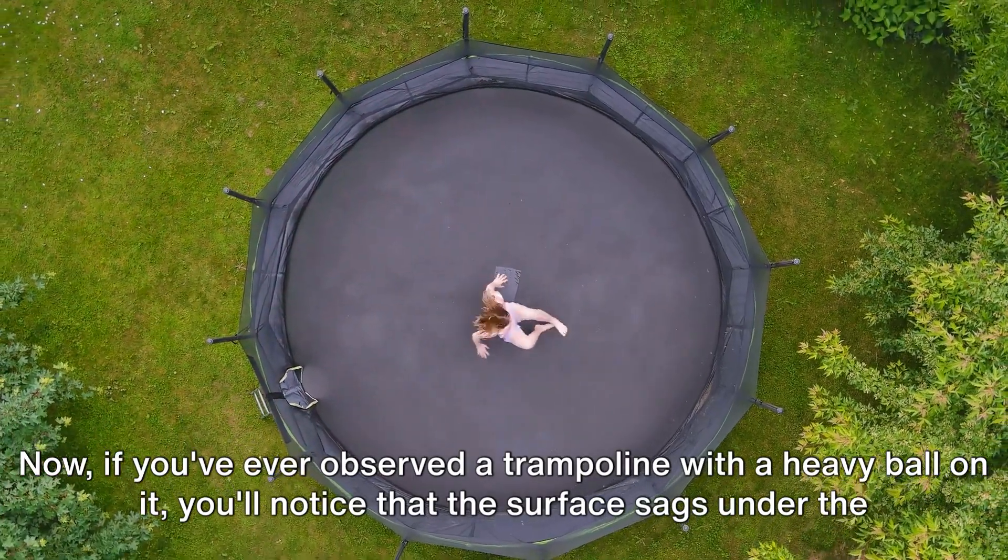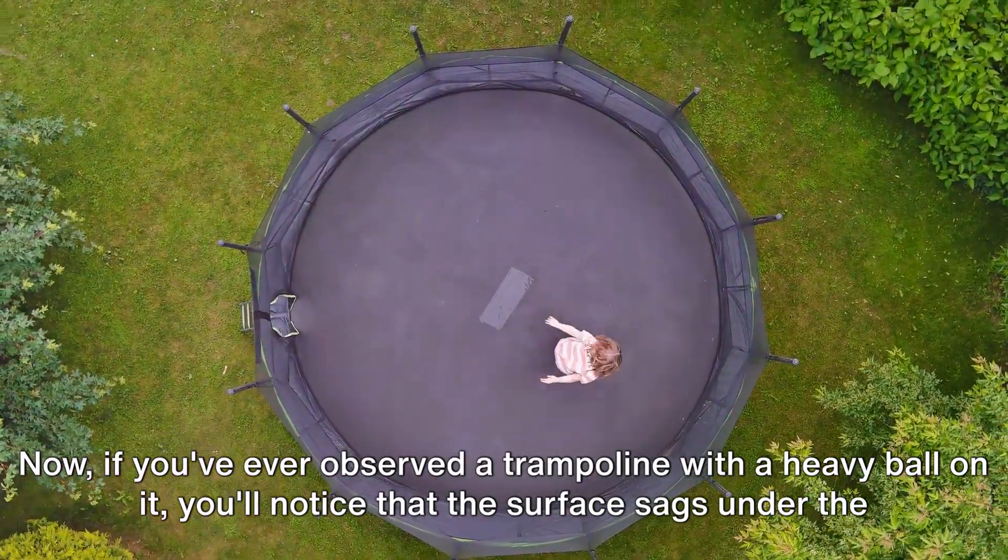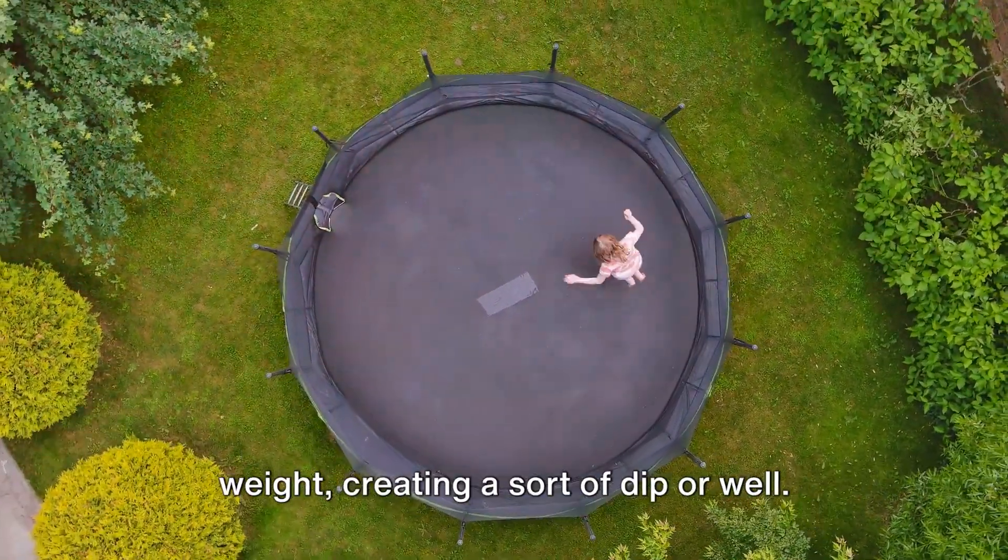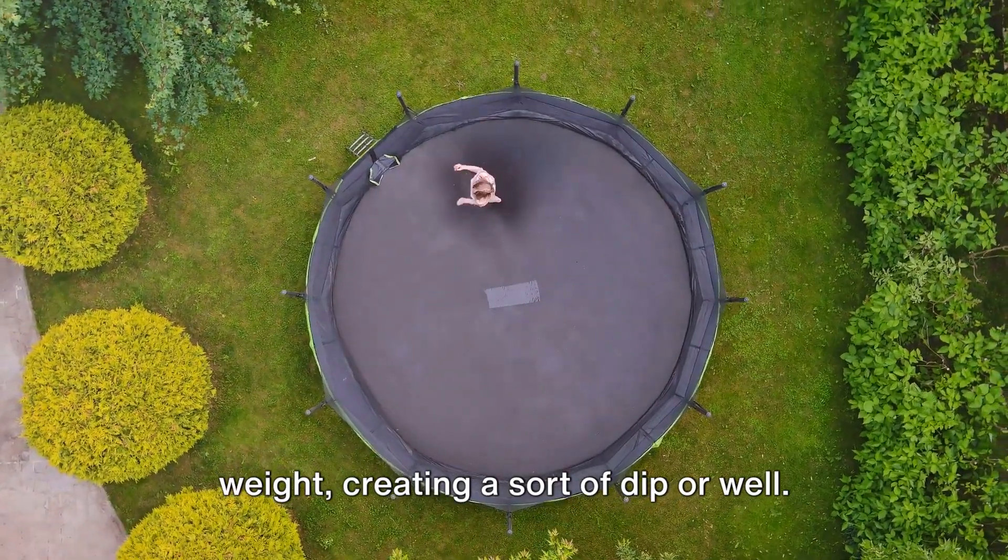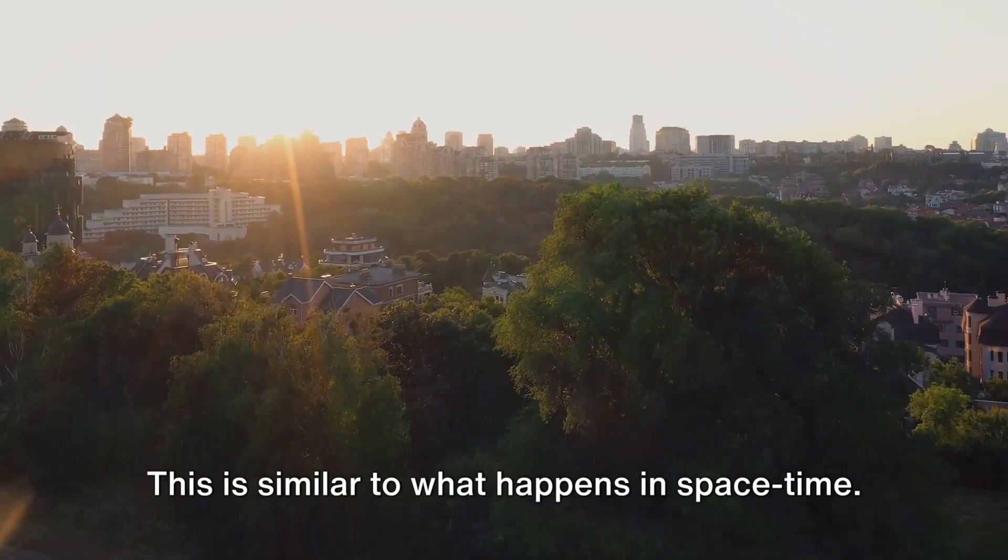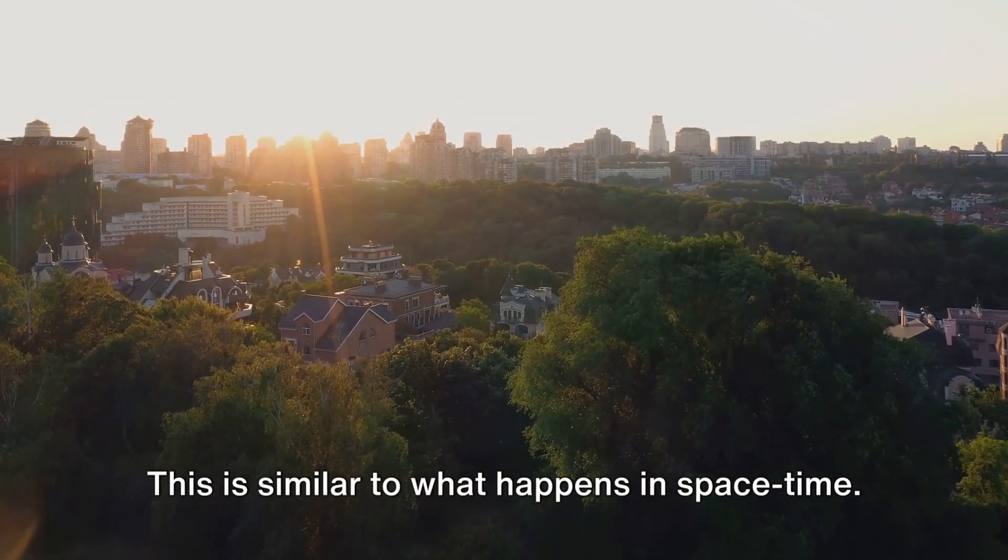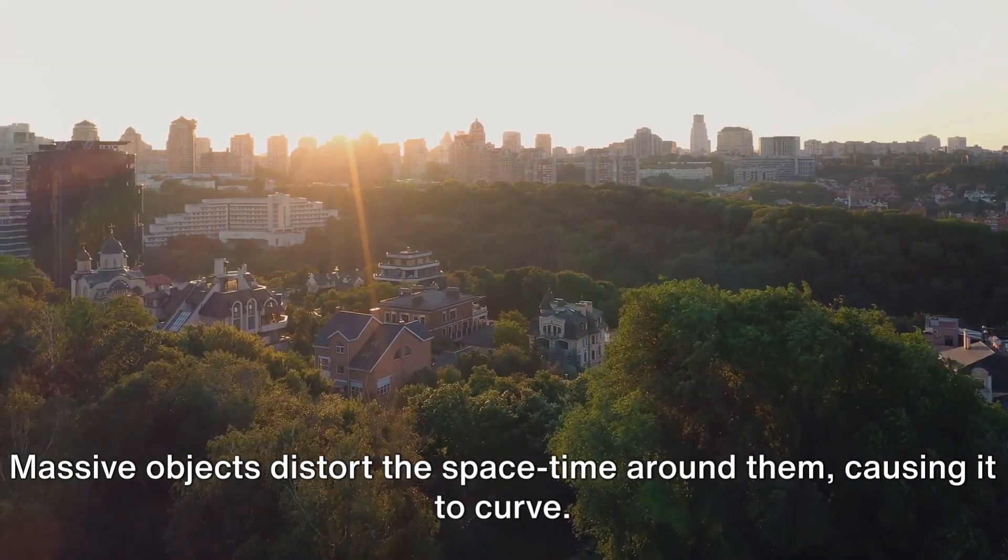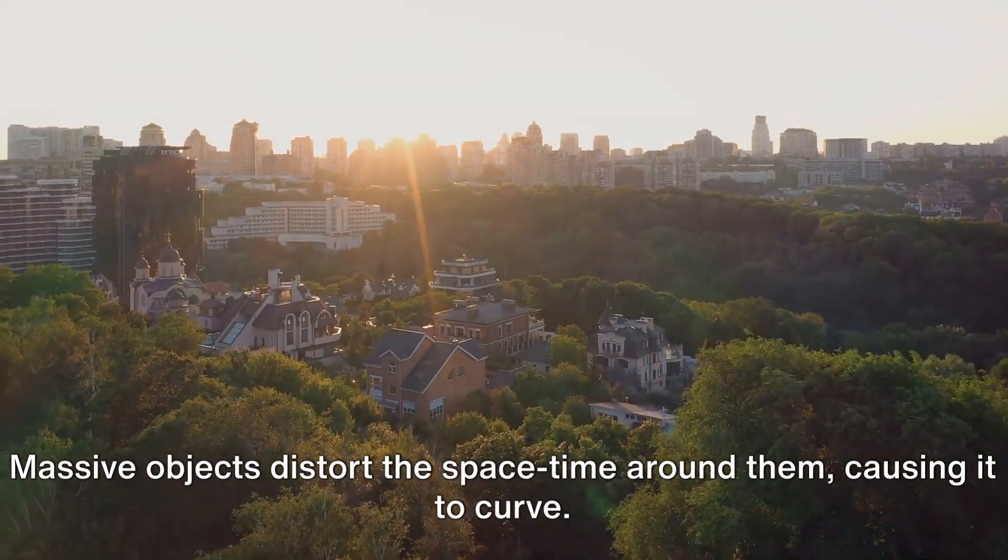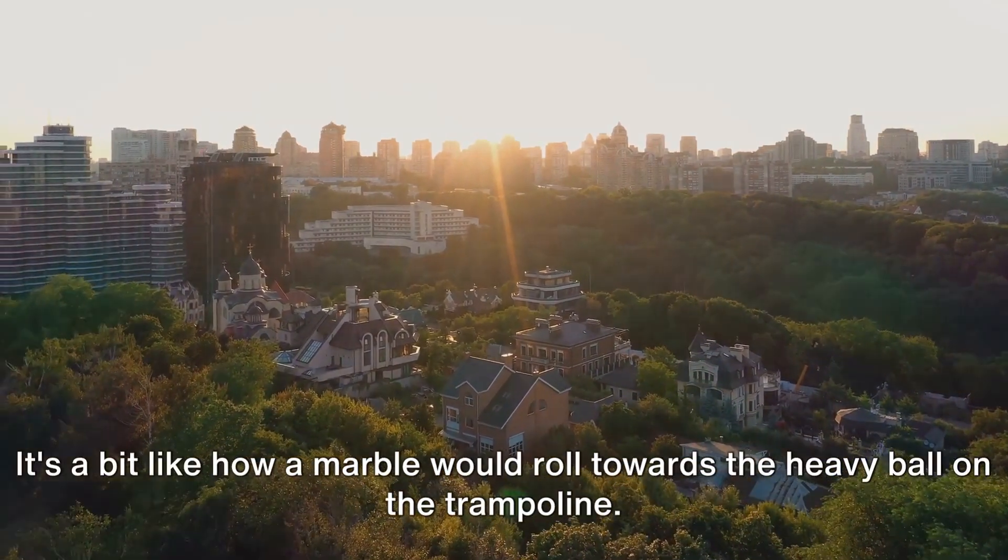Now, if you've ever observed a trampoline with a heavy ball on it, you'll notice that the surface sags under the weight, creating a sort of dip or well. This is similar to what happens in space-time. Massive objects distort the space-time around them, causing it to curve. This curvature is what we perceive as gravity.